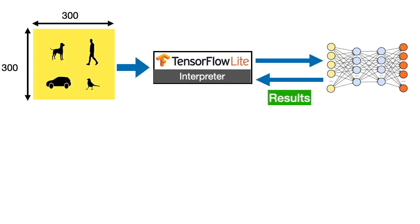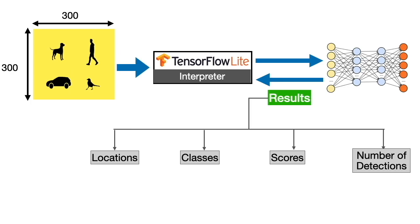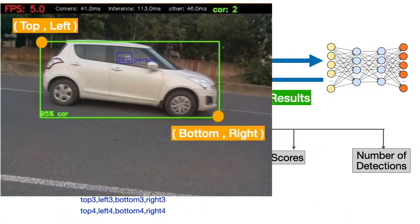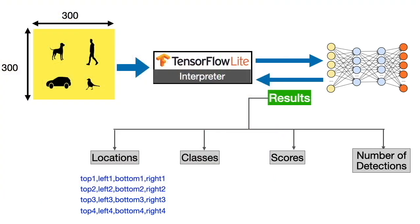The results contain these four parameters. The location parameter returns the top left and bottom right coordinates of the object. These coordinates are used to draw the bounding boxes around the objects.